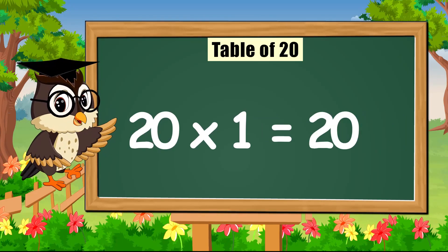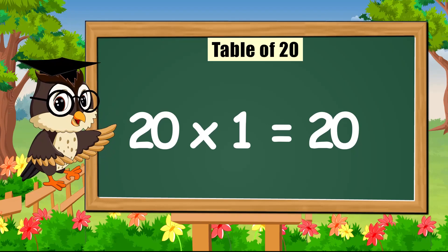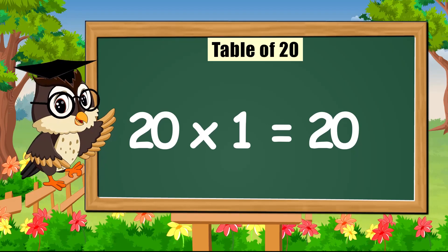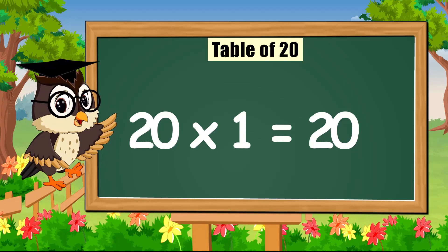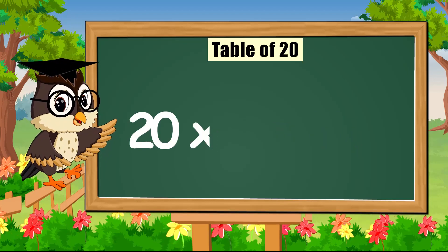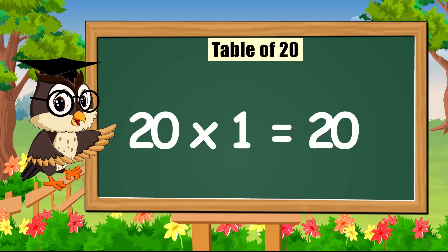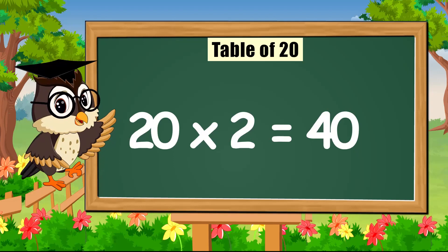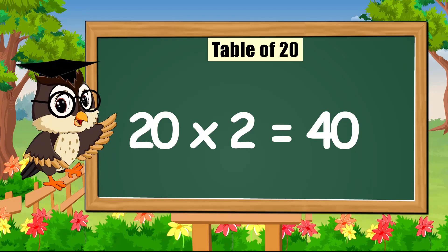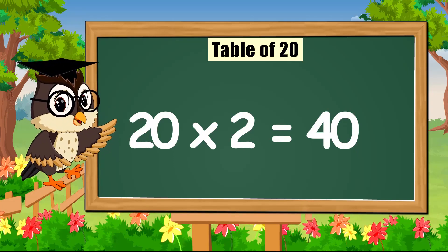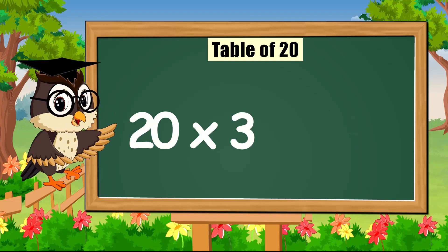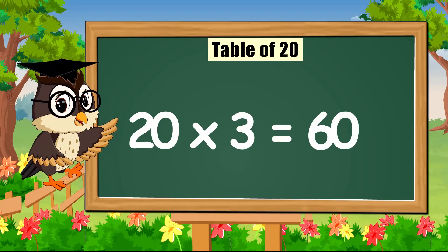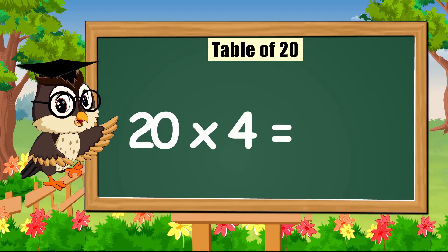Hello everyone, we are gonna learn today. Sing with me the table of twenty. Come on! Twenty times one is twenty. Twenty times two is forty. Twenty times three is sixty. Twenty times four is eighty.